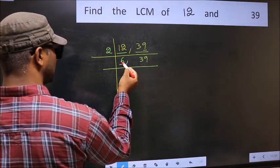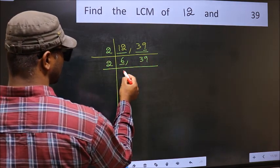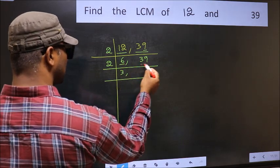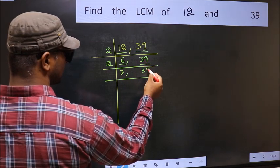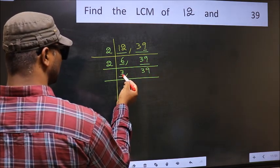Now here we have 6. 6 is 2, 3, 6. The other number 39 not divisible by 2. So you write it down as it is. Now here we have 3.